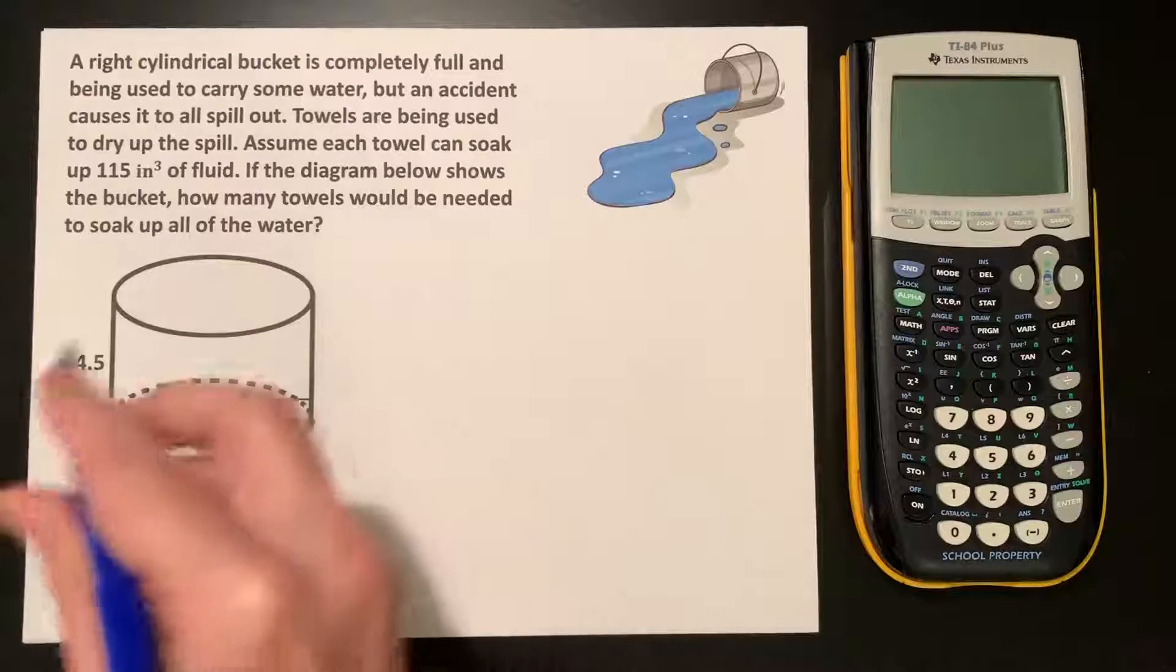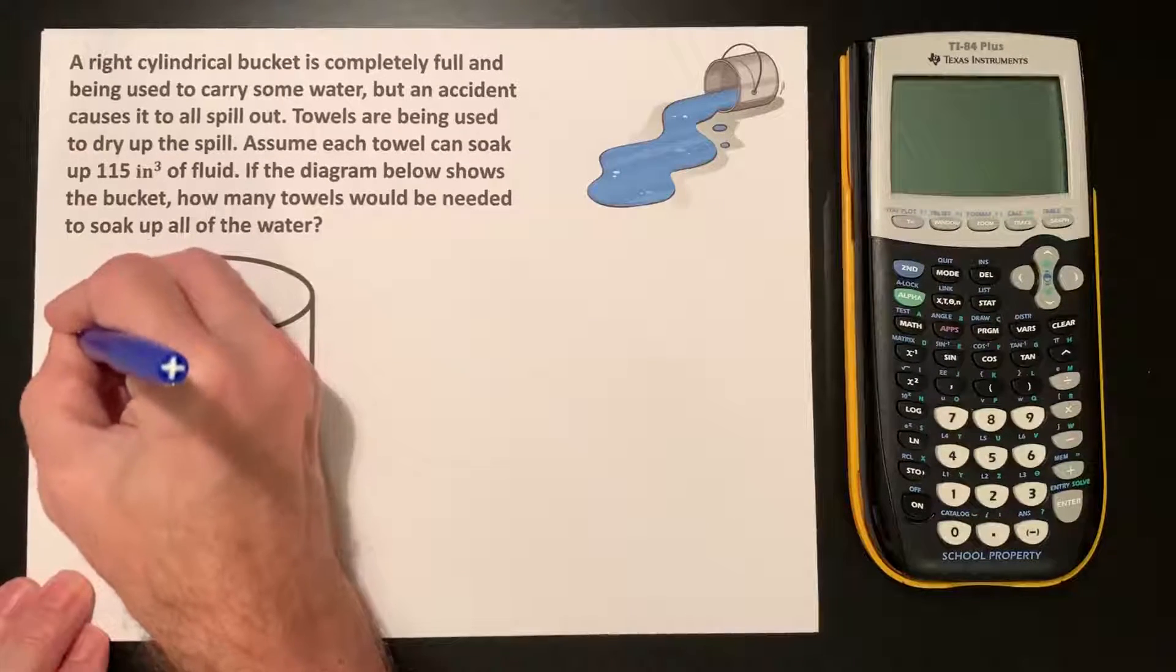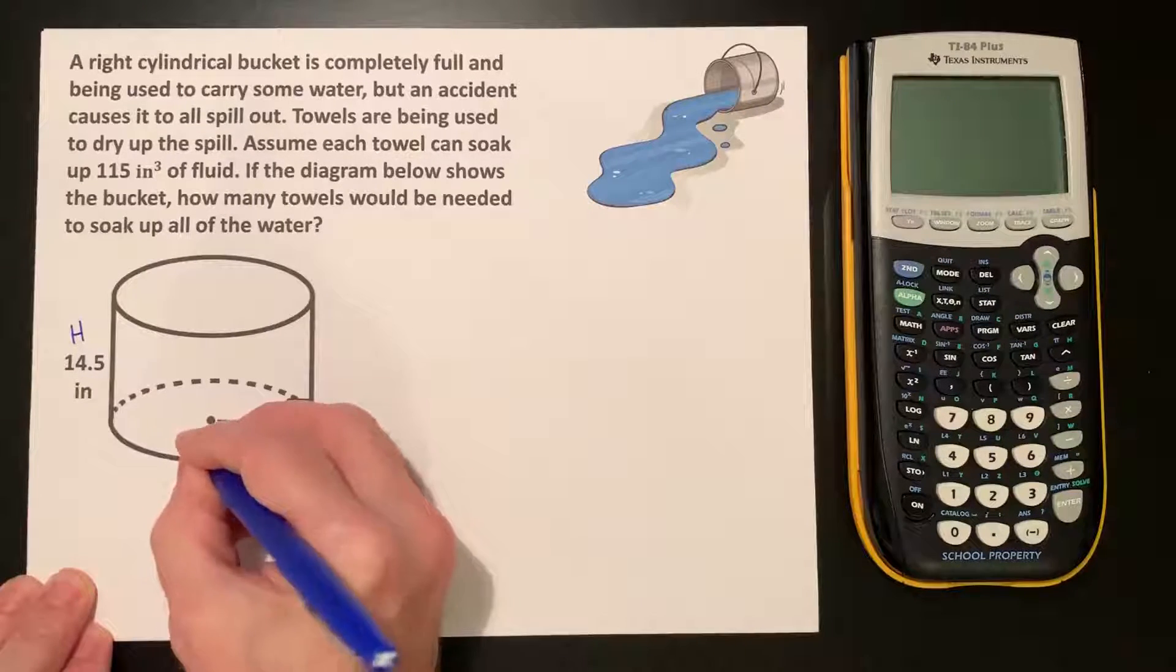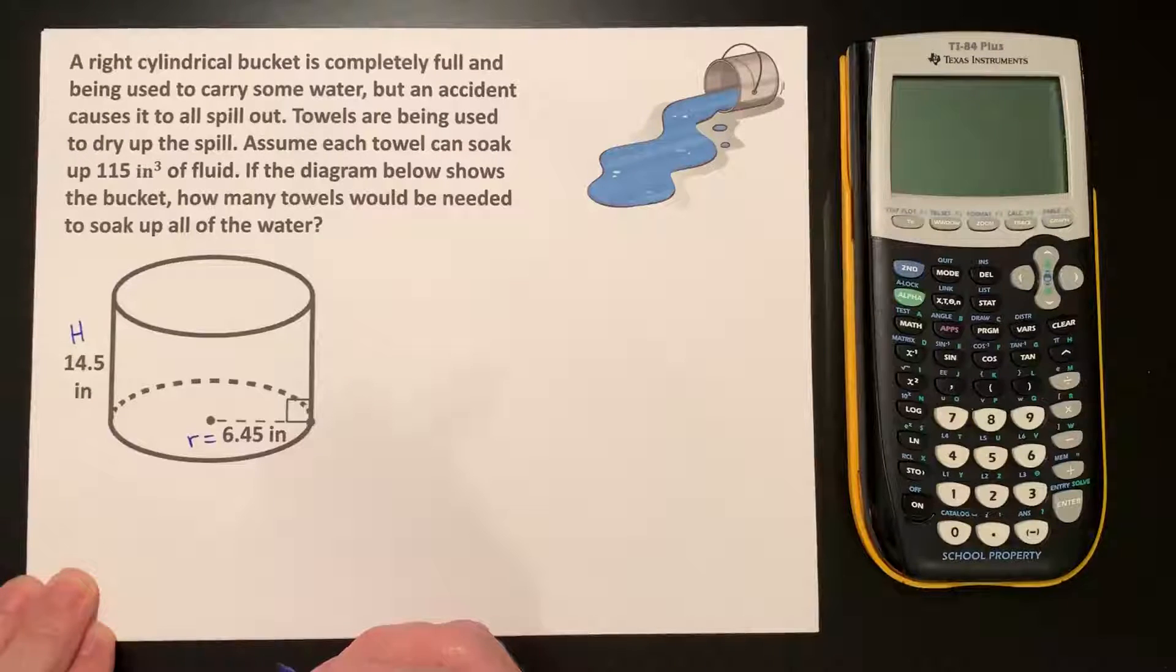We can see here that in our cylinder we have a height of 14.5 inches and we have a radius of 6.45 inches.